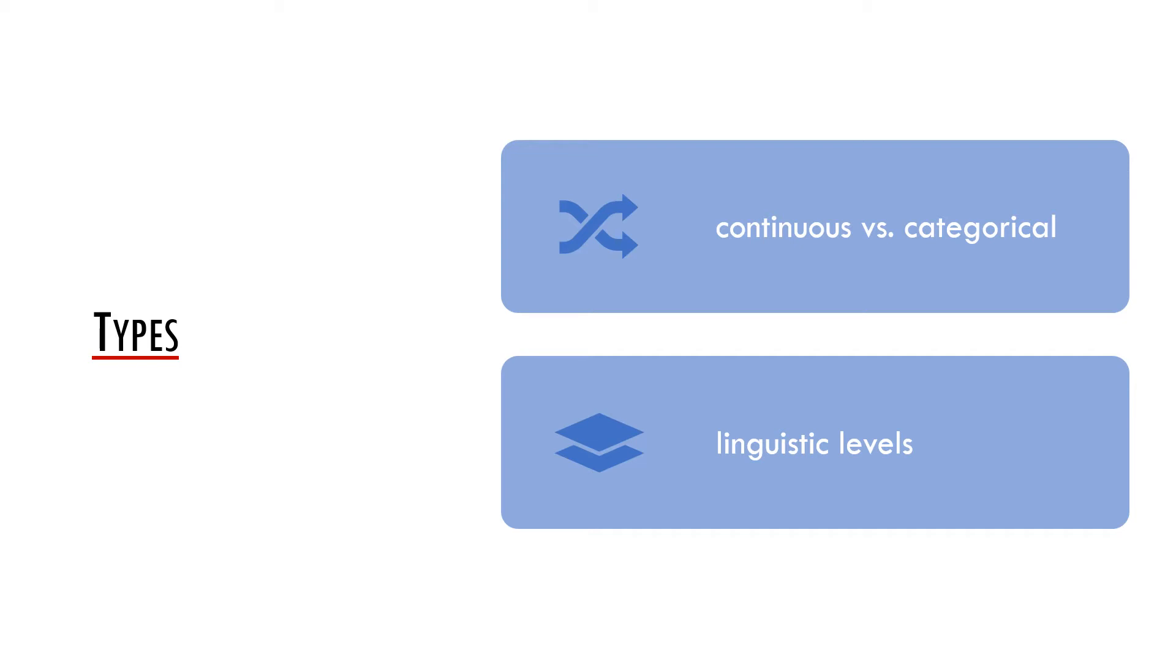One difference is between continuous and categorical variables. Categorical variables are variables which have sharp boundaries between the variants. This is the case of both examples we mentioned on the previous slide. There is no intermediate form between a and e, and there is also no intermediate form between n and ng.